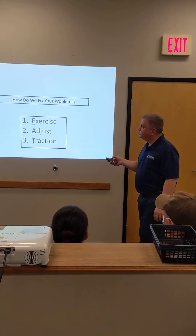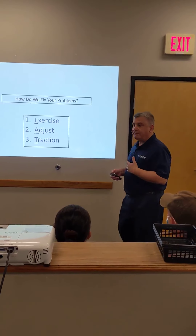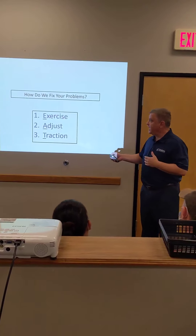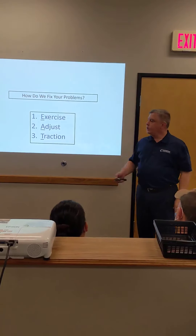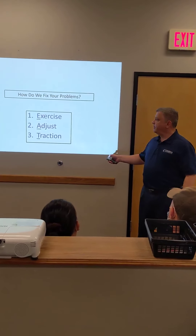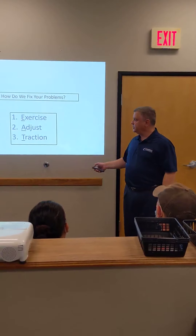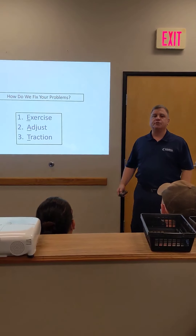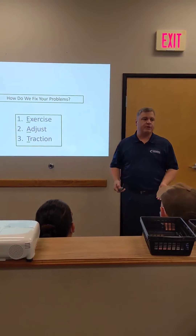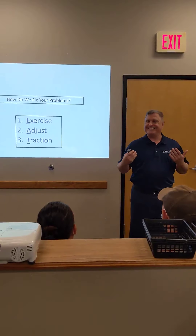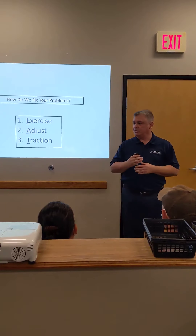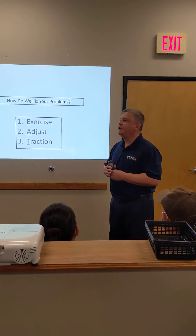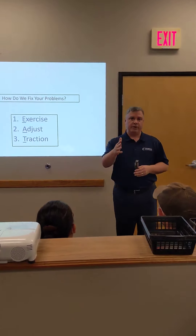So how do we fix these problems? In our office, we use a three-pronged approach: exercises in the office and at home, chiropractic adjustments or manipulation, and traction or decompression. Those are the three things we use to get the spine back to as near normal as possible.